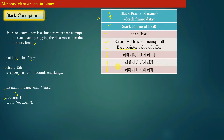We will discuss the base pointer in detail shortly. After the return address and base pointer, you have the local array, which occupies 12 bytes in the stack frame. Notice the layout: index 0 of the array has the lowest address and the last element has the highest address in stack memory.